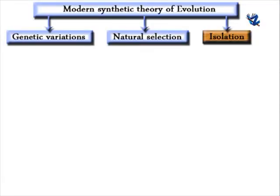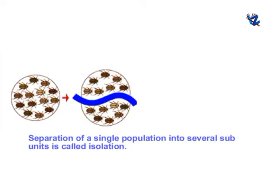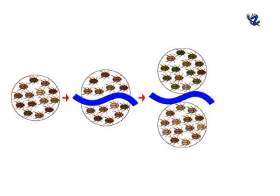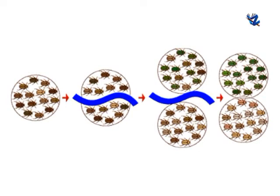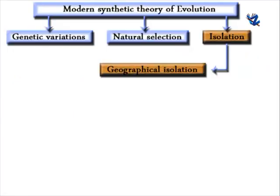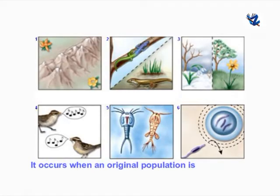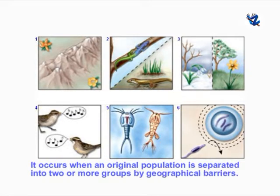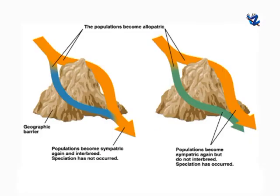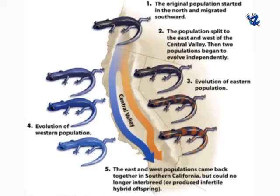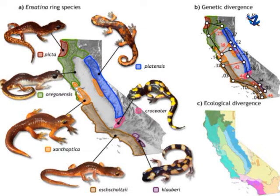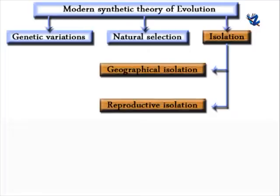The third concept is isolation. Separation of a single population into several subunits is isolation; no interbreeding between isolated groups occurs. Each group may develop a set of new traits leading to evolutionary changes and formation of new species. Geographical isolation occurs when an original population is separated into two or more groups by geographical barriers such as rivers, mountains and oceans. The separated groups are exposed to different kinds of environmental factors, develop distinct gene pools and do not interbreed.